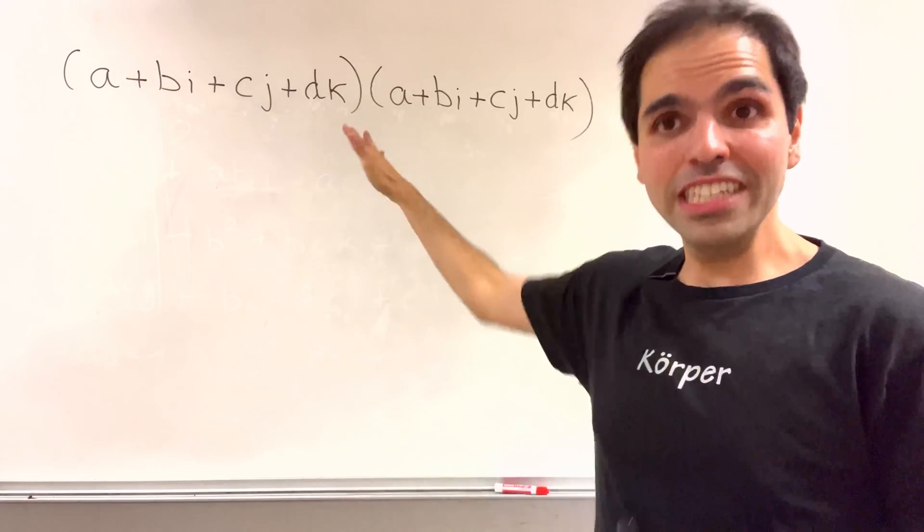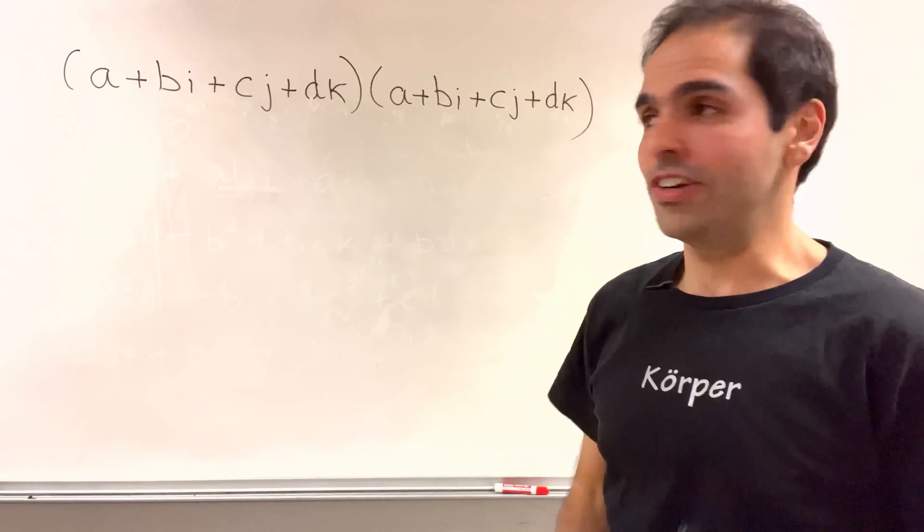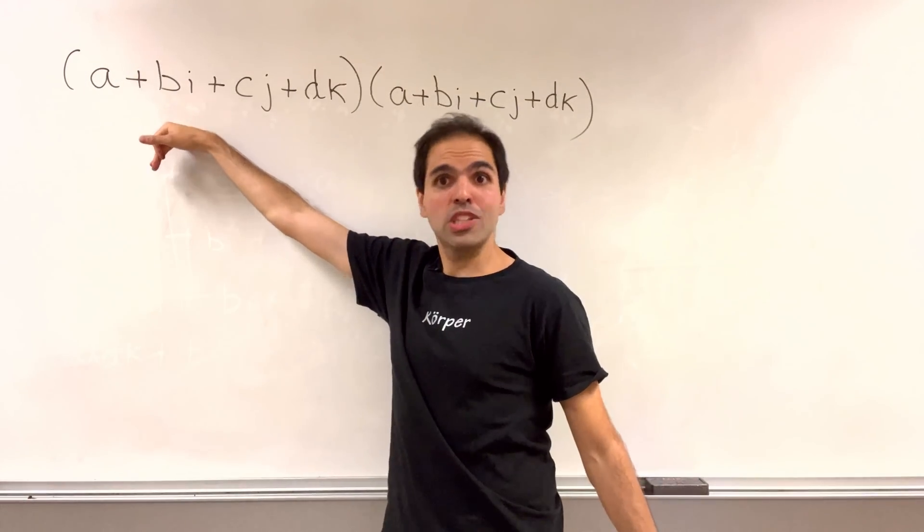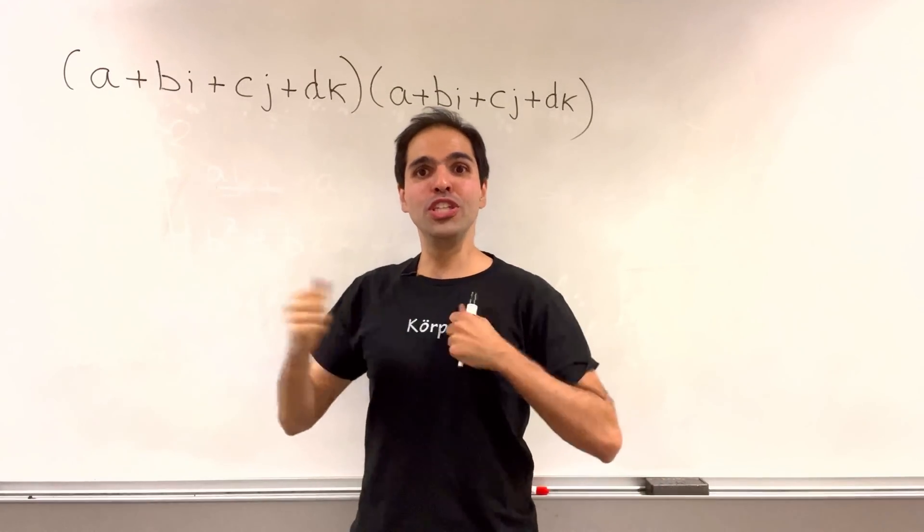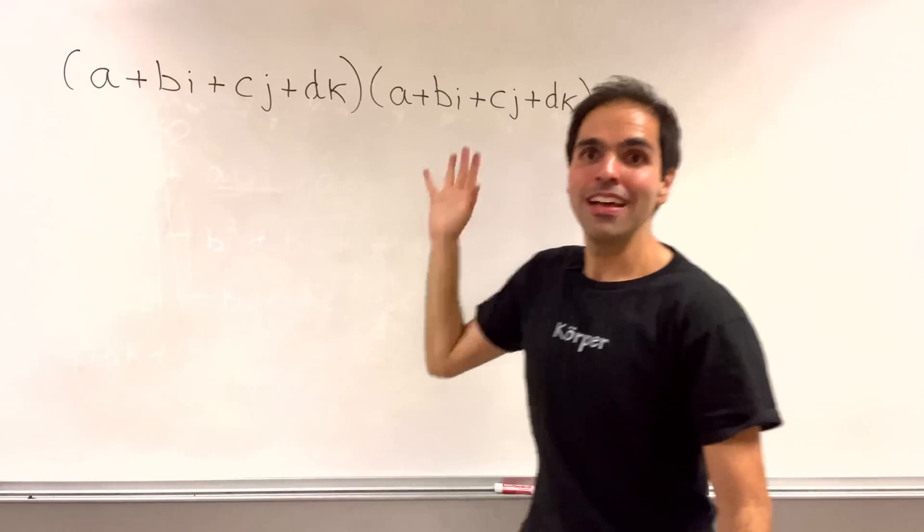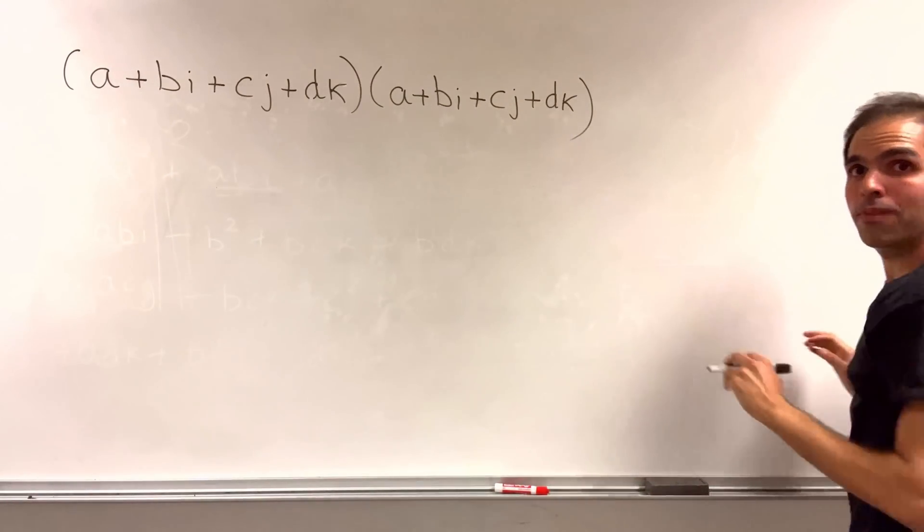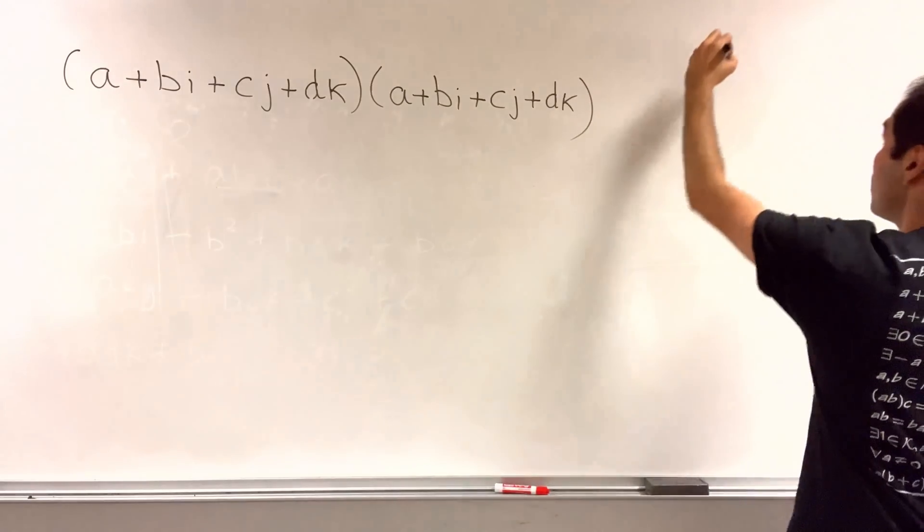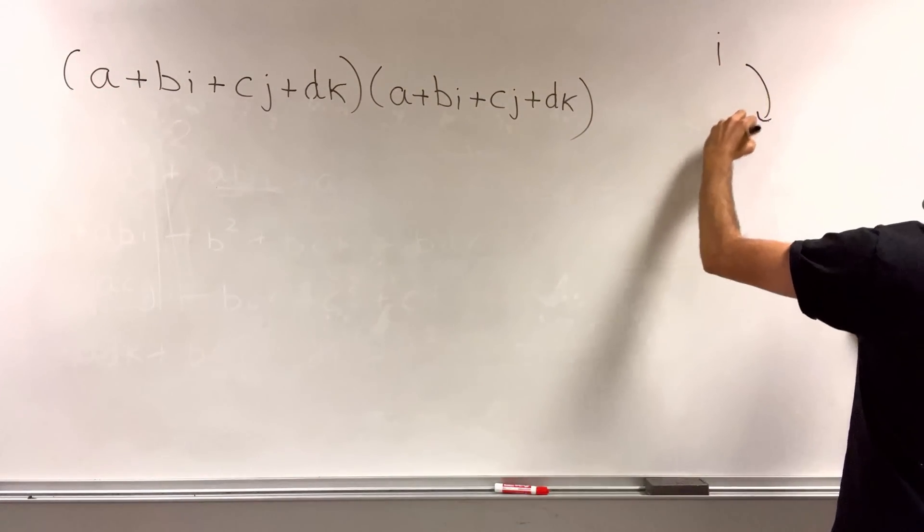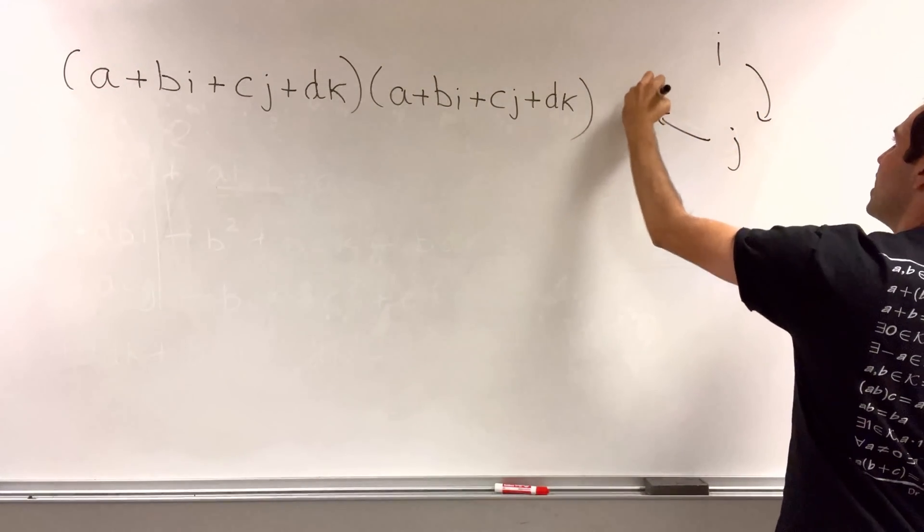But for this, we need to know how to multiply quaternions. First of all, a quaternion can be written as a plus bi plus cj plus dk. And the way to multiply them is simply to foil them out with the following rule that can be written in this diagram, ijki.